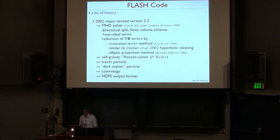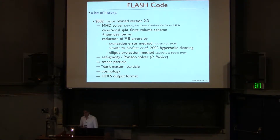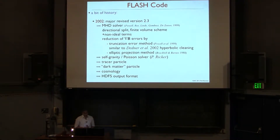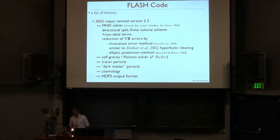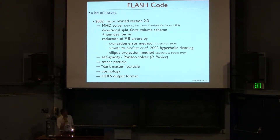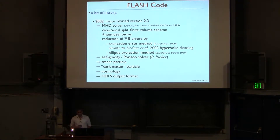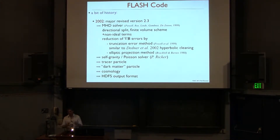A couple of years later, in 2002, they came up with a major revision. A major addition was to include magnetohydrodynamics, done by Powell et al., and the solver is called after them — either the Powell or 8-wave solver. For the hydro solver it's a finite volume scheme, an energy-conserving scheme. For the div-B error, it is handled by a truncation error method developed by Powell, very similar to what is also called the Dedner hyperbolic cleaning. You essentially wash out your div-B error over your entire simulation box rather than accumulating it at a specific point.